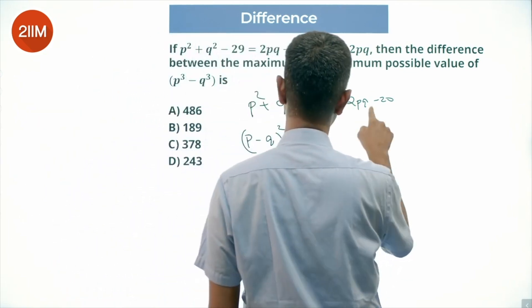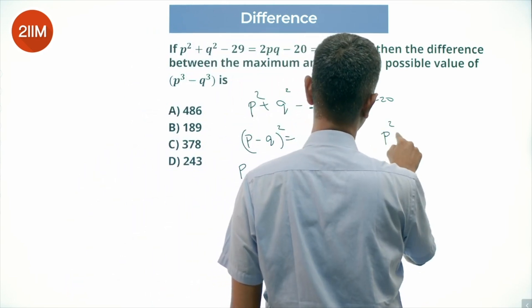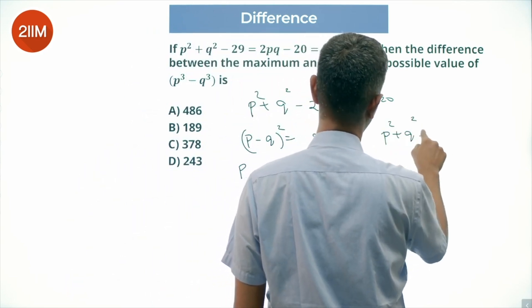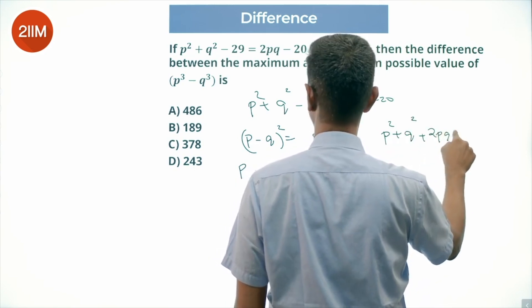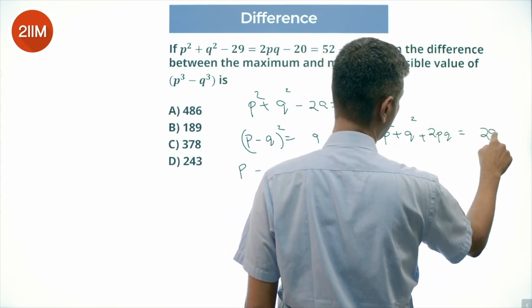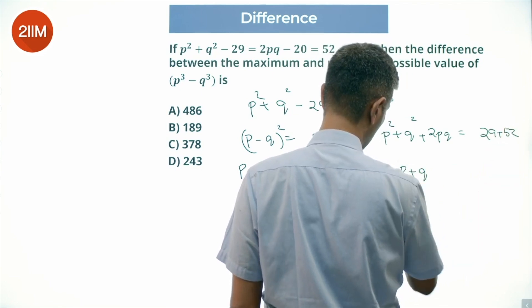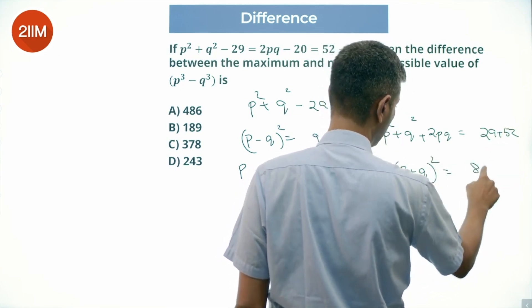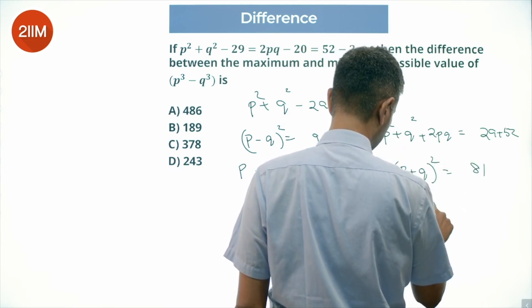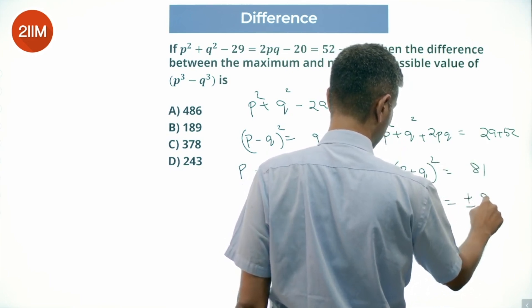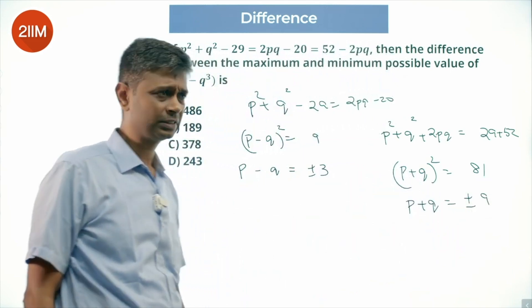What do we have here? Next equation is P square plus Q square plus 2PQ equals 29 plus 52, or P plus Q whole square equals 81. P plus Q is plus or minus 9. Nice.